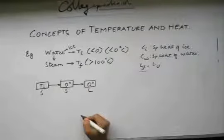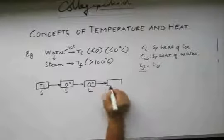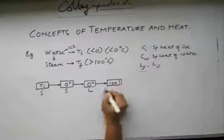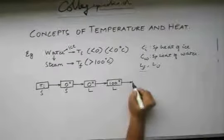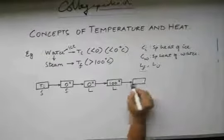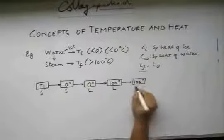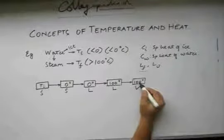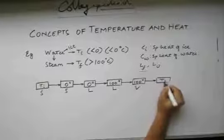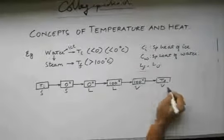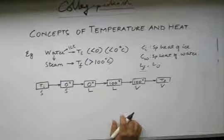So this temperature remains the same when there is a phase change. This phase is now liquid. When further heated, it will convert to water at 100 degrees, which is liquid. Again if heated more, this will convert to 100 degree Celsius steam, which is now in vapor form. This vapor form will have to be heated more to get our final temperature Tf. This is the flow the process is going to follow.